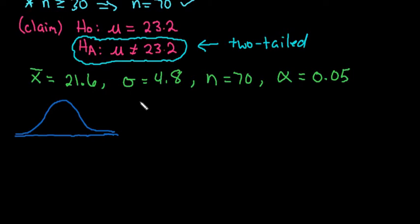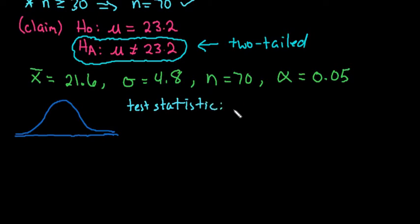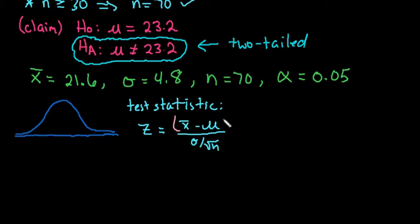The test statistic formula for the z-test is: z equals X-bar minus mu, divided by sigma over the square root of n. When plugging this into your calculator, make sure you put both the numerator and the denominator in parentheses, or else you will make a mistake.